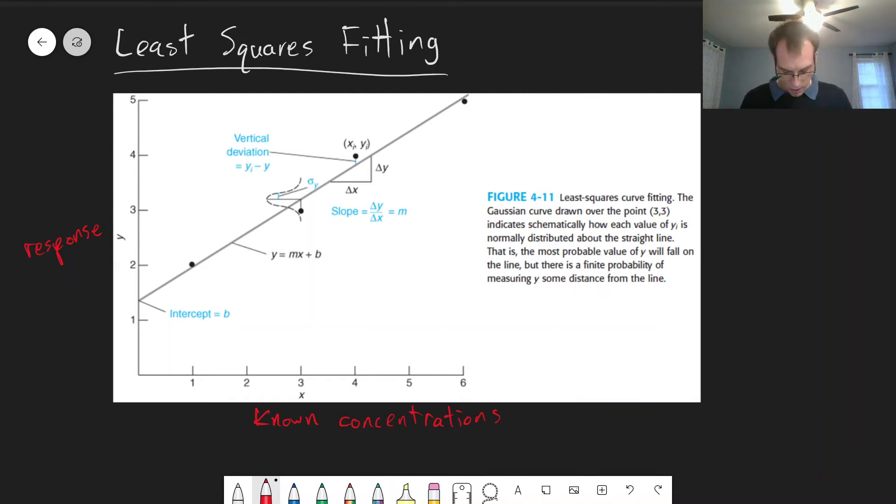So the basic idea is we have a bunch of data points, these dots here. And this data should ideally be linear, but of course it will never be exactly linear. There will always be some deviation from a perfect line. And what we want to find is if we have the set of, say, four data points here, how do we draw the line that's closest to all these data points that goes through them? And that's the purpose of least squares fitting.